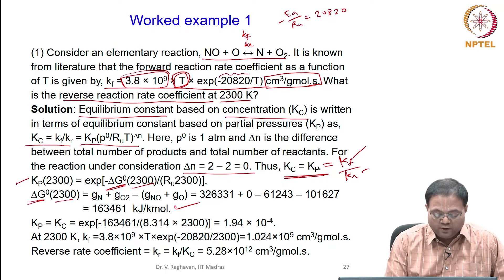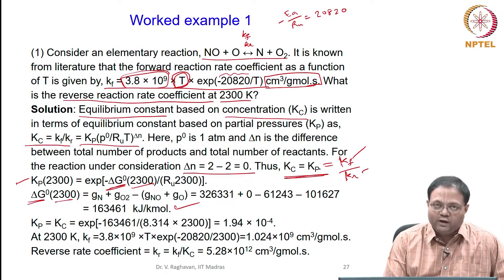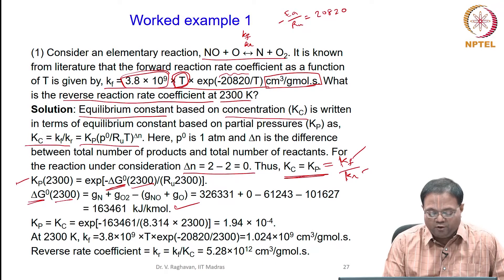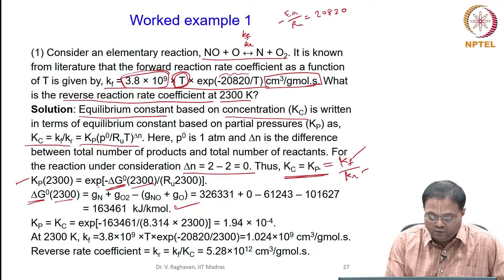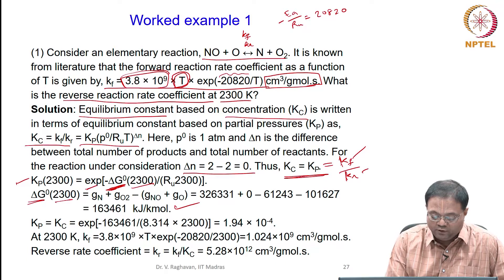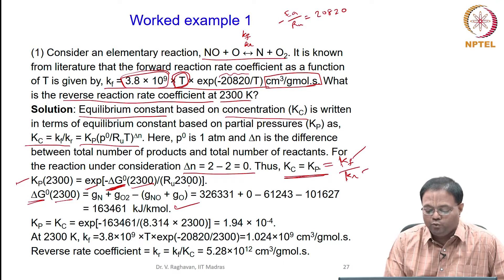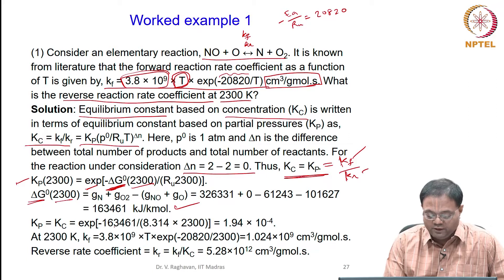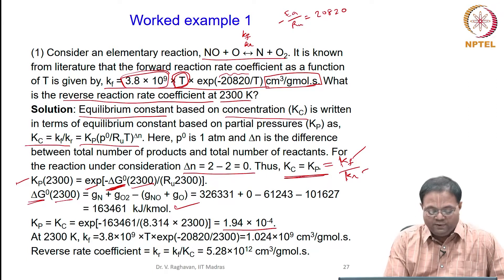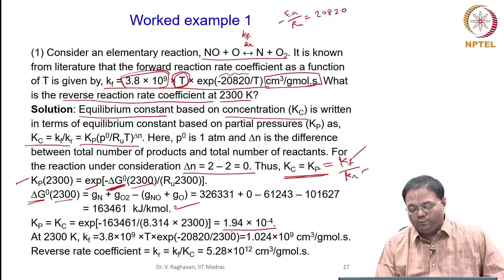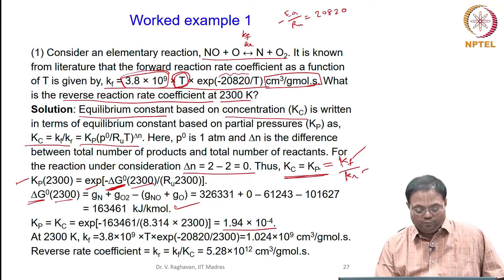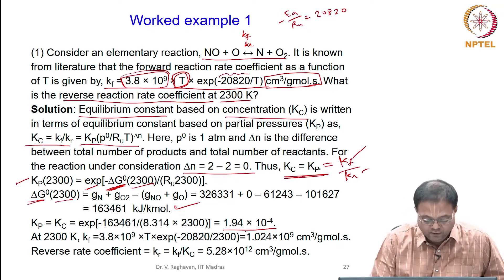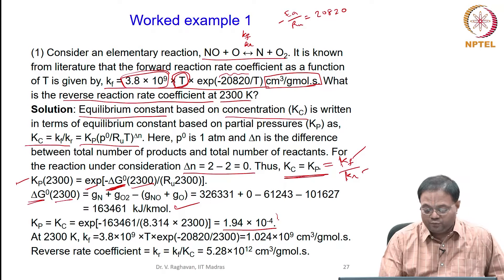Kp, which equals Kc here, is calculated as the exponent of minus delta-G divided by RuT. Substituting the value of delta-G gives Kp equals Kc equals 1.94 × 10⁻⁴.